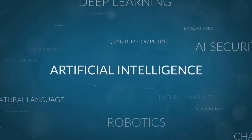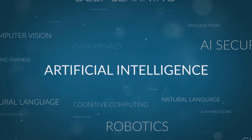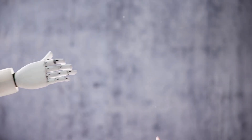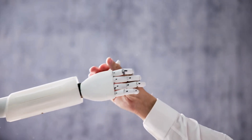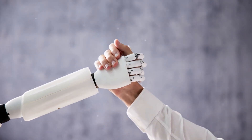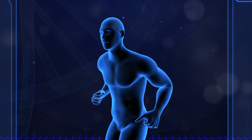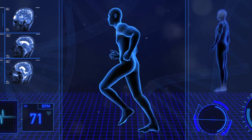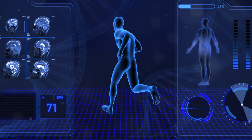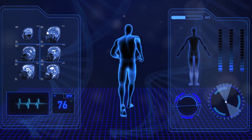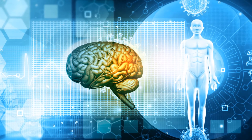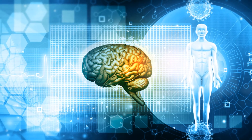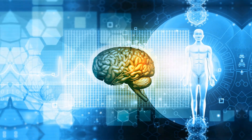Agentic AI refers to systems made up of multiple intelligent agents that work together autonomously to achieve specific goals. In healthcare, these agents can interact, collaborate, and make decisions to improve patient outcomes. Let's explore the top 10 use cases and the AI techniques behind them.